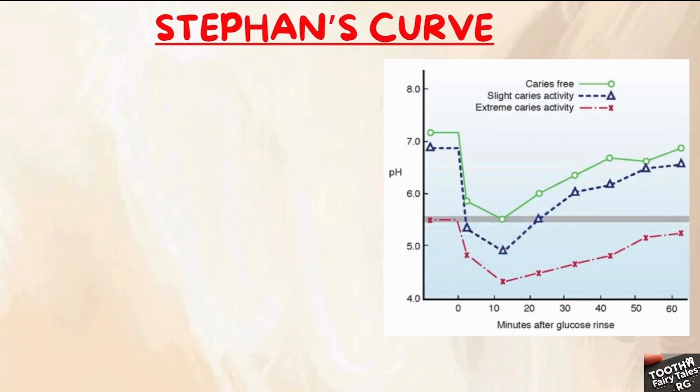Finally, let us look at the patient with significant caries activity. The red line indicates the significant or extreme caries activity. After the glucose rinse, pH drops sharply and stays well below 5.5 for an extended period of time. This prolonged period of low pH means the enamel is under constant attack